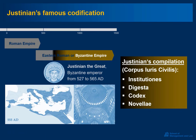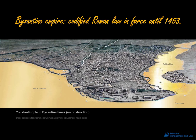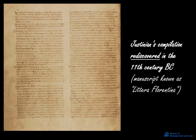Justinian's compilation continued to form the basis of the applicable law in the Byzantine Empire, even though later on it was somewhat simplified through newer compilations aimed at summarizing its essence and making it more accessible. The corpus remained in force until the end of the Byzantine Empire in 1453. In the West, however, Justinian's compilation disappeared — the text was lost for centuries. But then, in the 11th century, a manuscript of Justinian's compilation was rediscovered in the library of a monastery in Italy. The rediscovered manuscript later came to be known as the Littera Florentina, and it is among the treasures kept in Florence, forming the basis for all later editions of the Digest.